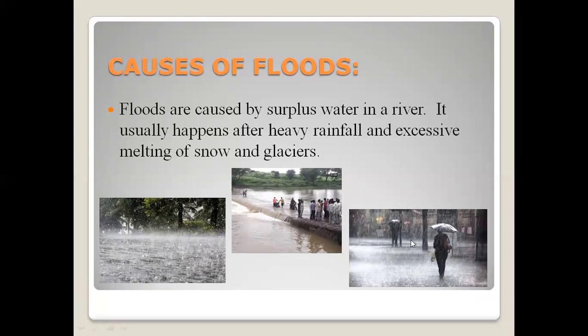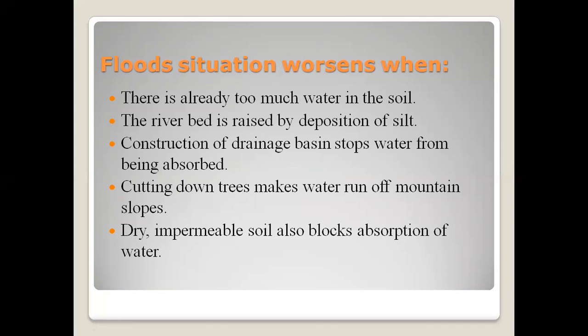As you can see here, heavy rainfall is shown and you can see the overflowing of water from the river. When the flood situation worsens — when there is already too much water in the soil — it cannot absorb more water. The river bed is raised by deposition of silt; when there is more silt at the bottom of the river, it raises the water surface. Construction and drainage basins also stop water from being absorbed. Cutting down trees makes water run off mountain slopes, as tree roots no longer hold the water.